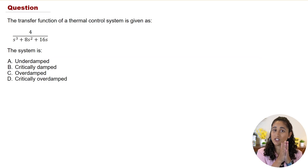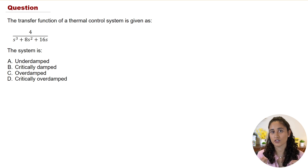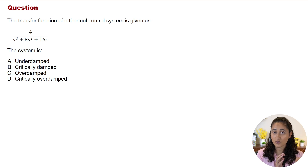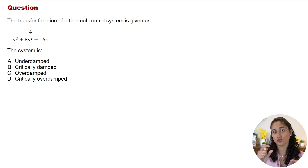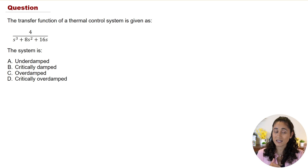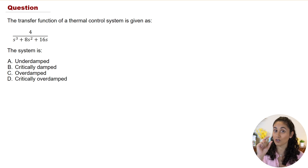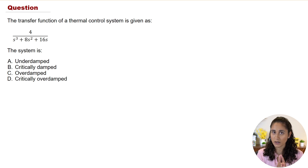We are given the transfer function of a thermal control system and we want to determine the damping characteristic of the system. We have a transfer function multiplied by the step input, which is 1/s. To determine if the system is underdamped, critically damped, or overdamped, we need to determine the damping ratio by comparing this transfer function to the second-order equation in the reference handbook.